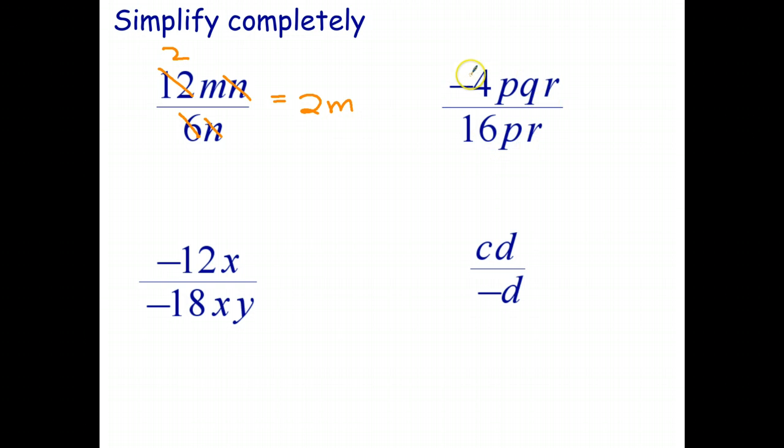This one here, I can go 4 goes into negative 4, negative 1 times. Again, I'm not going to write the 1. And 4 goes into 16 four times. So I'll put it there, but not in my final answer. So there's going to be a 4 in my denominator. The p's divide out, the r's divide out, and that leaves a q. So that simplifies to negative q on 4.